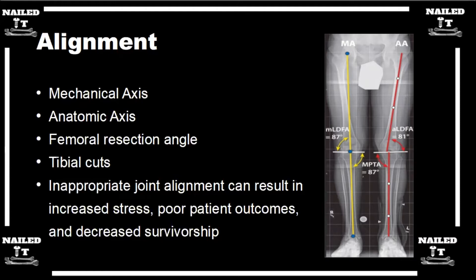As far as talking about alignment, the simplest way to think about it: the mechanical axis is a line drawn from the center of your femoral head to the center of your ankle. That is the mechanical weight-bearing axis of the limb, and that is what you are trying to restore within your replacement.